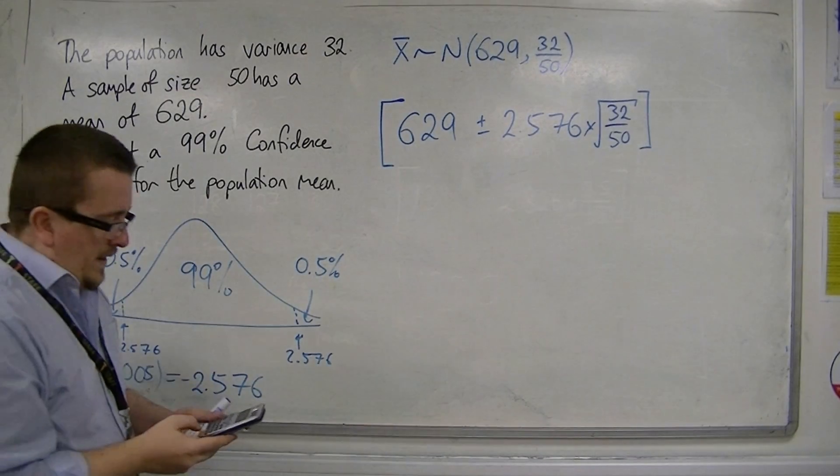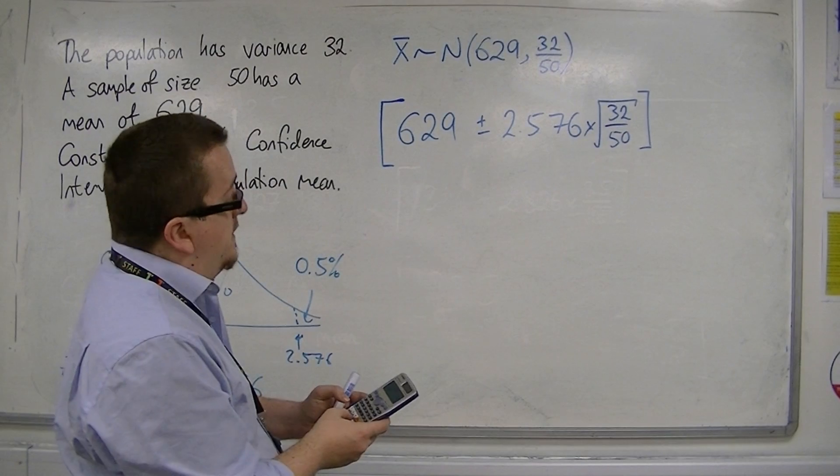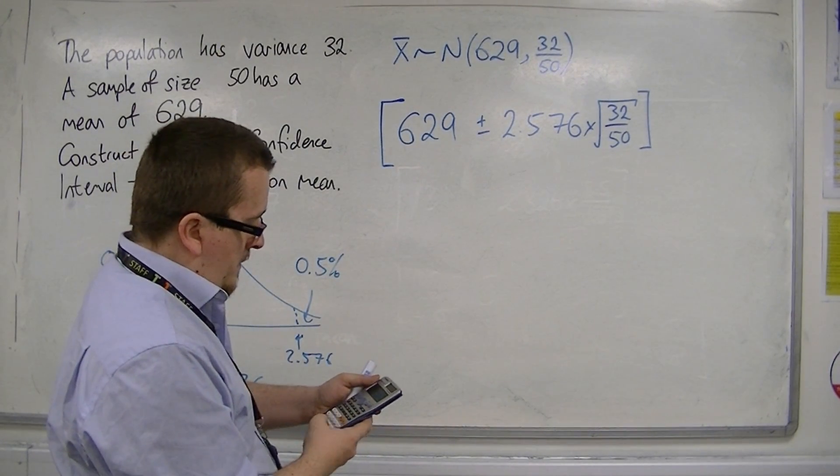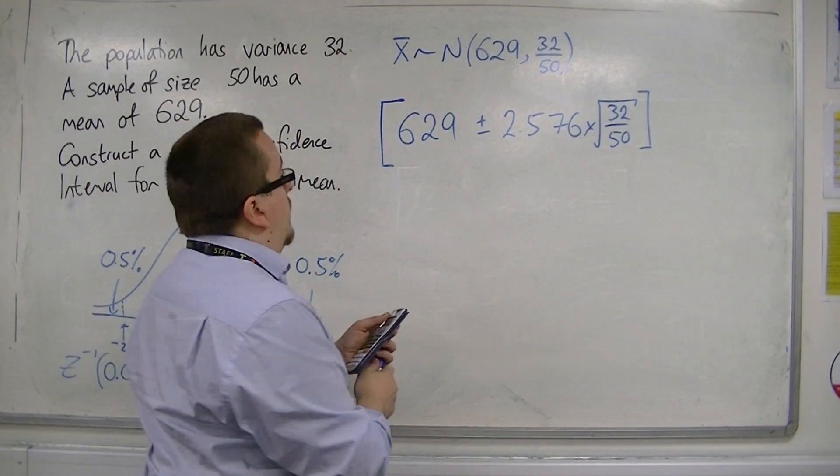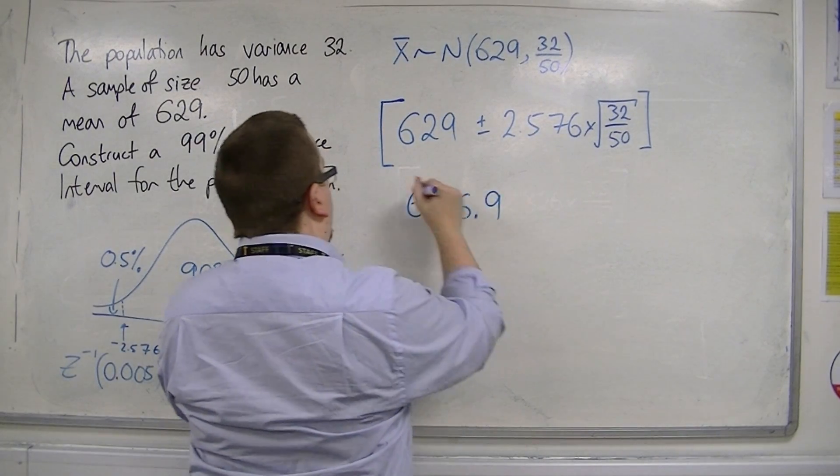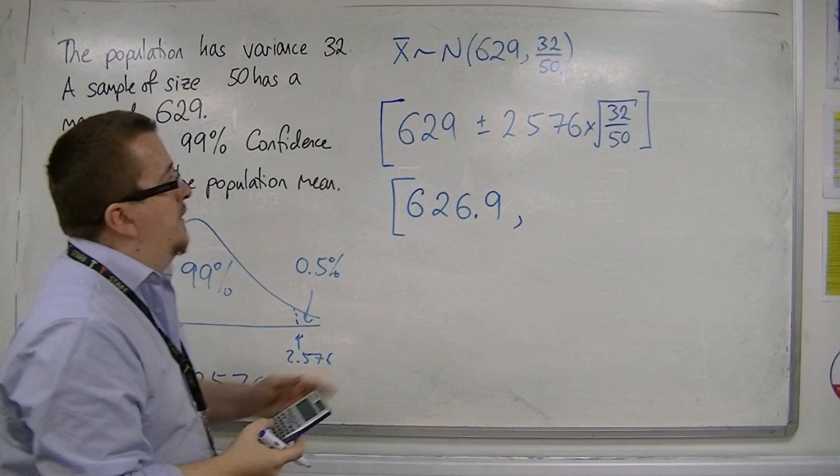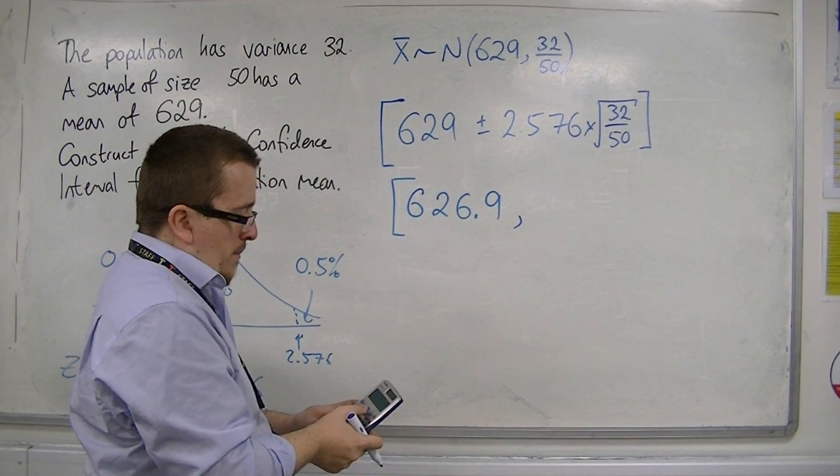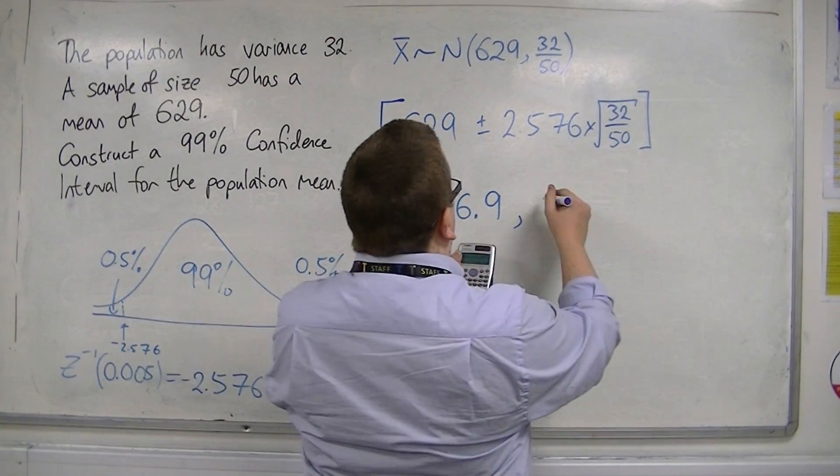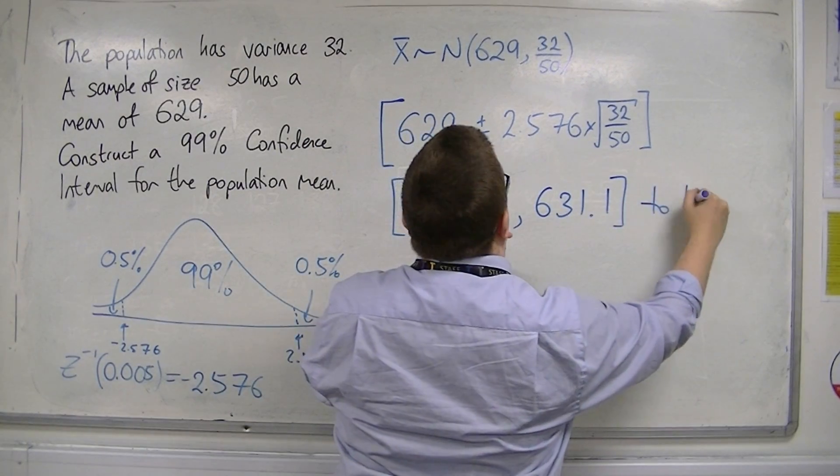So, if we plug these values in, 629 take away 2.576 times by the square root of 32 over 50. So that gets me 626.9, that's the lower confidence limit. And then if I change this to a plus, then we've got 631.1 to one decimal place.